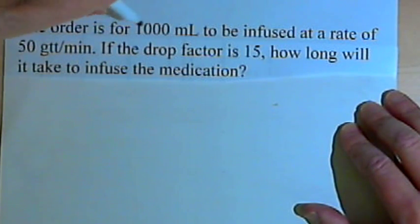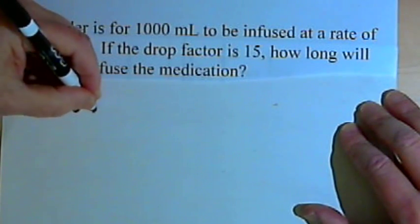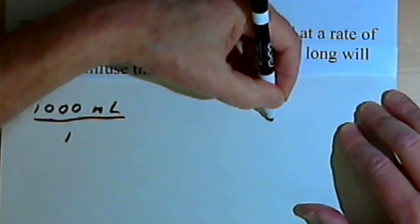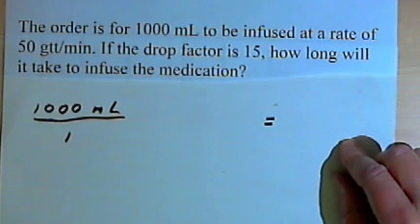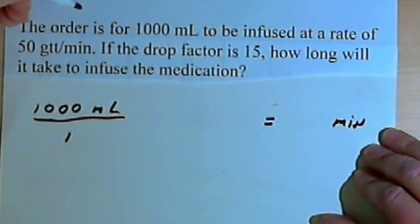Okay, so let's take the amount ordered, 1,000 milliliters. I'll write that down. Once again, I'll make it into a fraction, I'll put it over 1. Over on the right side of the equation, I want to write down the units that I'll be left with. I want to be left with time, so I'll put in minutes. Now let's fill in the rest of the information.